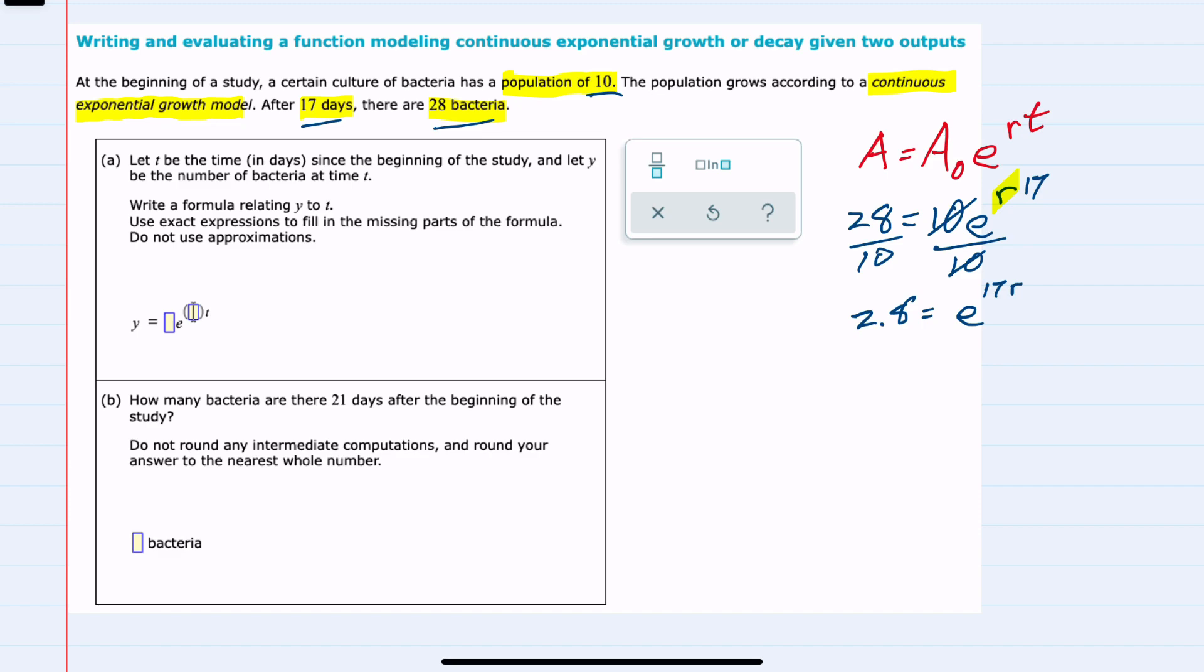Since r is in the exponent, I'll use logarithms. With base e, I can use natural logs on both sides. This gives ln(2.8) equals 17r. Dividing both sides by 17, we get r equals ln(2.8) over 17.